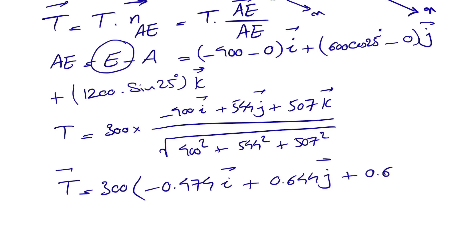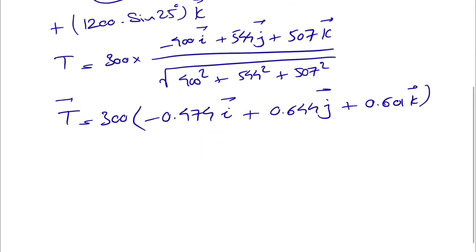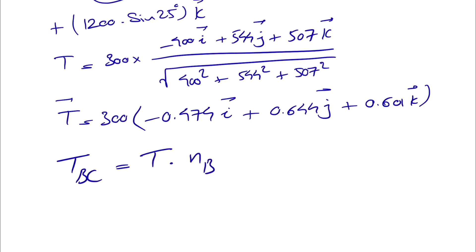That was the first part. For finding the projection onto line BC of the force, we also need the unit vector for BC. To find the projection of force T on line BC — which we call T_BC — we have the scalar (dot) product of T and the unit vector for BC. We've found T, and now we need the unit vector n_BC.